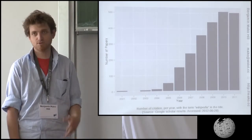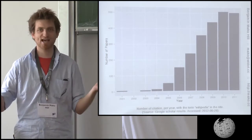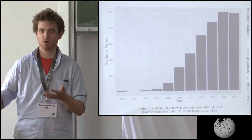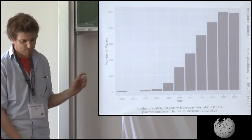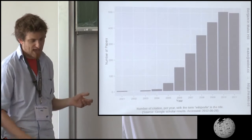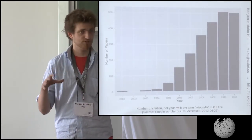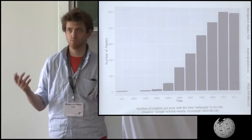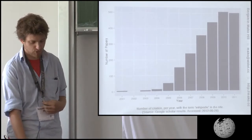Some of these papers are asking this question of like 'does Wikipedia work?' — measuring quality and comparing it to some other work. The answer is always yes, Wikipedia works. But the real bulk of these are focused more on the question of how does it work — looking at dynamics, quantitative and qualitative work, really trying to understand the processes working in Wikipedia communities.